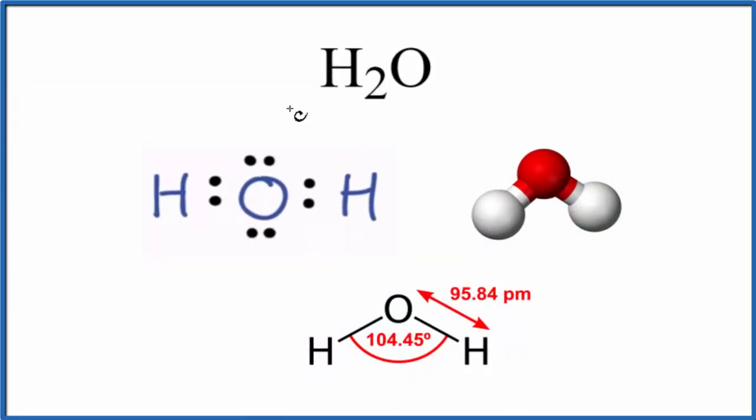So this is the Lewis dot structure for water and we can see these pairs of electrons. These are the chemical bonds between the hydrogen and the oxygen. These are covalent bonds. What that means is that they're shared.